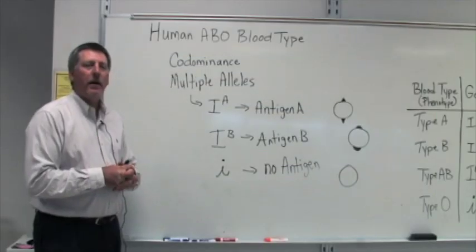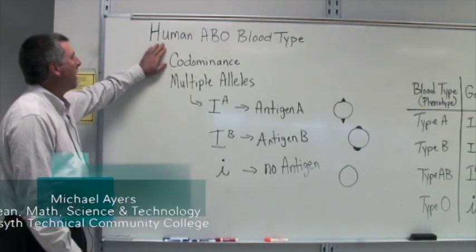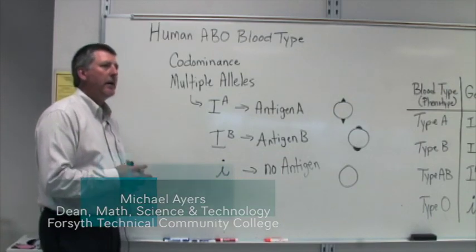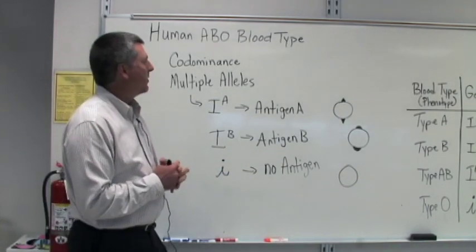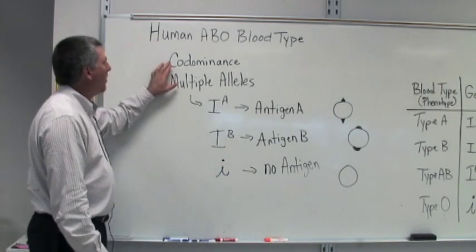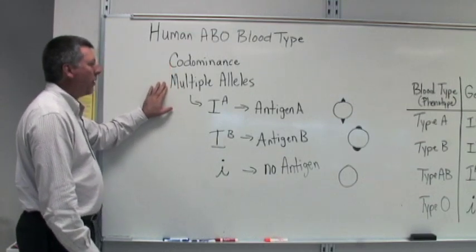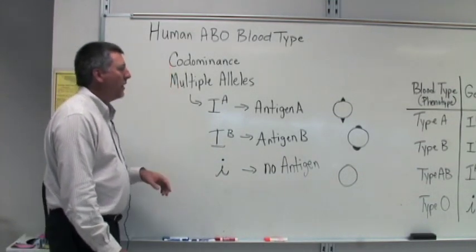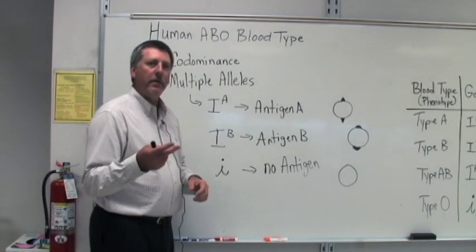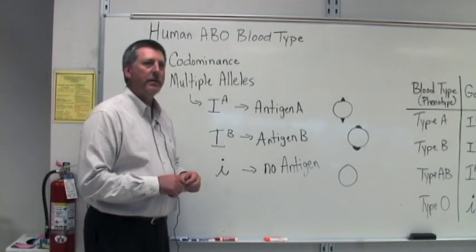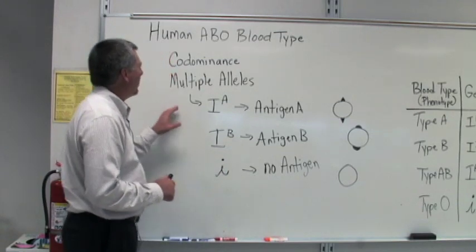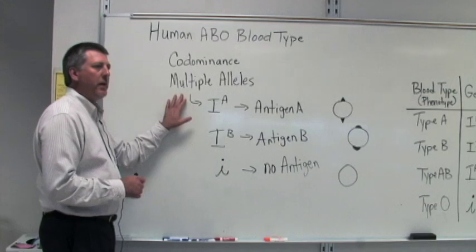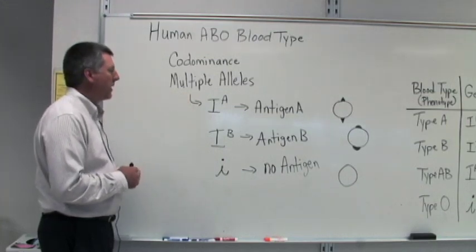Let's think a little bit about genetics as it's related to the human ABO blood type. This is a really interesting situation because it exhibits both codominance and multiple alleles. In the situation of codominance, when there are two different alleles, both are expressed equally. This is also a situation in which we have multiple alleles for one particular gene locus.